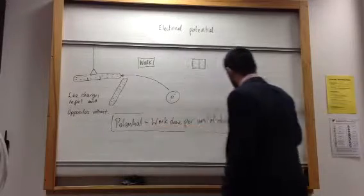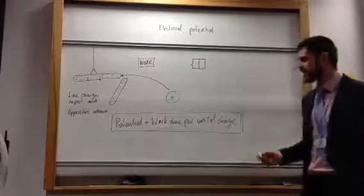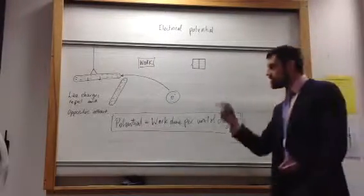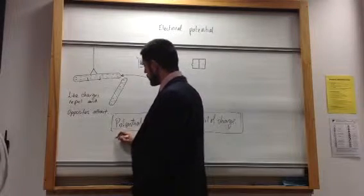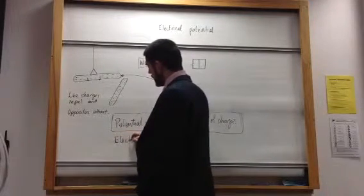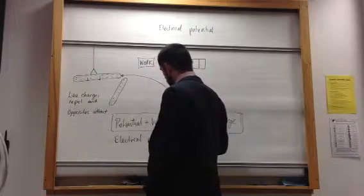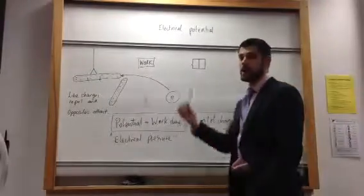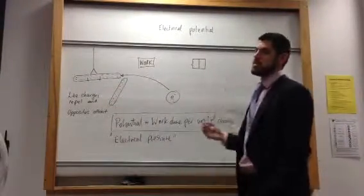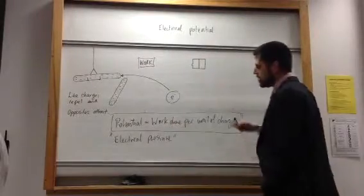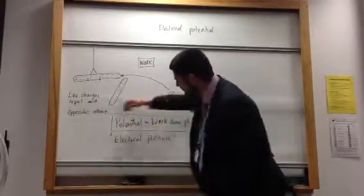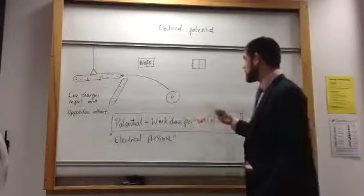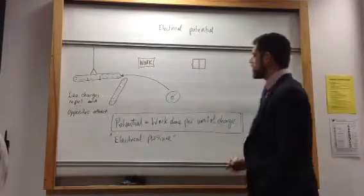That, to a lot of people, is still a little bit unclear. So I like to think of it, at this stage, as electrical pressure. If you think of electrical pressure, that makes a lot of sense — things want to get away. At high pressure, things move away; things move from higher pressure to lower pressure. And if we consider this idea of potential as electrical pressure — even though we know it's to do with energy, the work done per unit of charge — thinking of it as electrical pressure helps us understand what's going on.